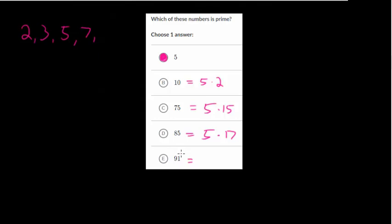Now 91 is a little tricky because we know it's not divisible by 2. 3 does not go into it either because 9 plus 1 is 10 and 10 is not divisible by 3. 5 doesn't go into it because it doesn't end in a 0 or 5, so we can check 7.